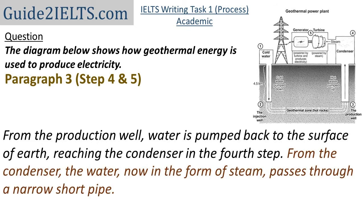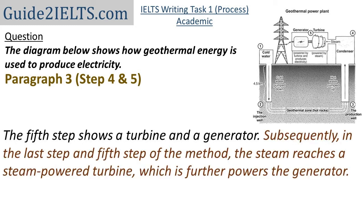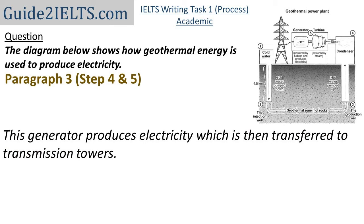From the condenser, the water, now in the form of steam, passes through a narrow, short pipe. The fifth step shows a turbine and a generator, and finally there's a transmission tower. So I'll write it as: 'Subsequently, in the last and fifth step of the method, the steam reaches a steam-powered turbine, which further powers the generator. This generator produces electricity, which is then transferred to transmission towers.'